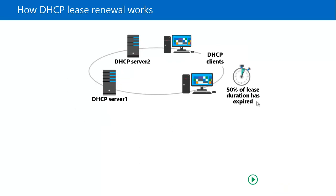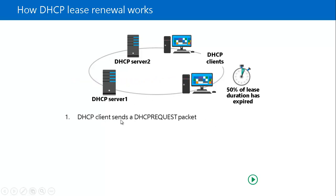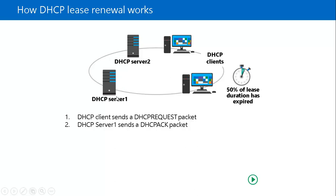For DHCP lease renewal: when 50% of the lease duration has expired — for example, after 4 days of an 8-day lease — the DHCP client sends a DHCP Request to the DHCP server indicating that 50% of the lease has expired. The server responds with a DHCP ACK message and the lease is renewed for another 8 days. This renewal cycle repeats every time 50% of the lease elapses.